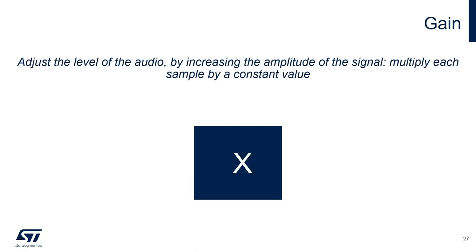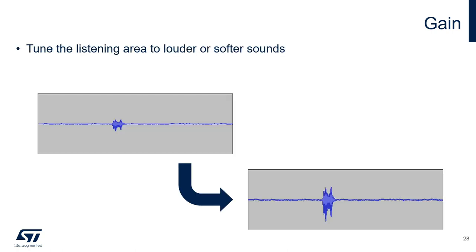Gain is the process of adjusting the level of the audio by increasing or decreasing the amplitude of the signal. This can be simply done by multiplying each sample by a constant value. Gain is used to focus on softer sounds which could be too low in the overall PCM range. It can be described as the volume of the recording and it must be applied properly in order not to reduce the PCM resolution.